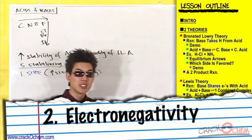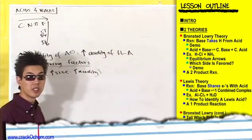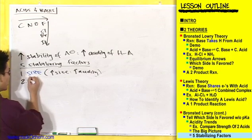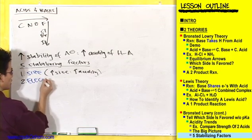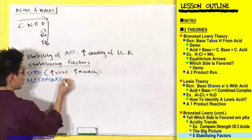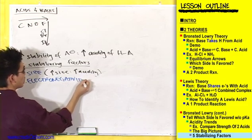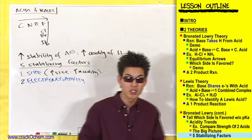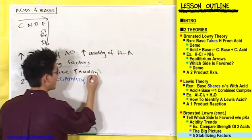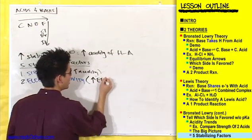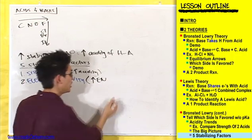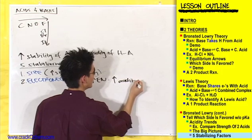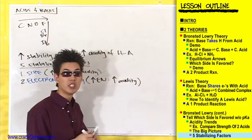The second factor of stability to look for when evaluating a conjugate base is electronegativity. If you increase your electronegativity — I'll abbreviate this as EN — you're going to increase your acidity, increasing the willingness to give up a hydrogen.